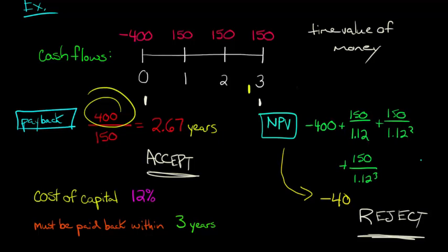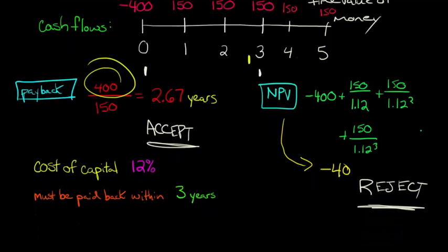Another thing, this is an illustrator here. Let's say that the project went an additional two years. Let's say the project went five years in total, and we had cash flows of 150 in year four and 150 in year five. Now I'm not going to go through all the calculations, but now we'd actually have an NPV positive.